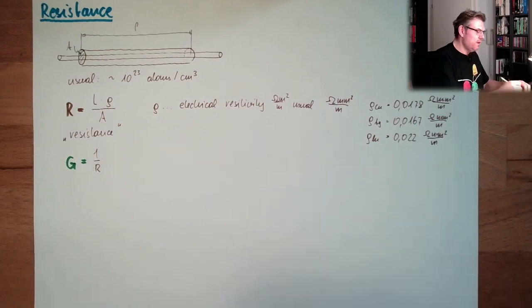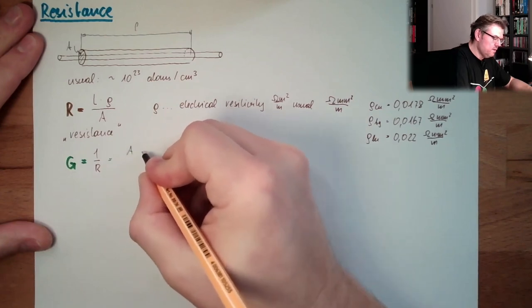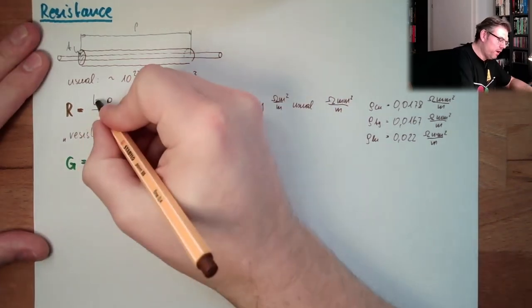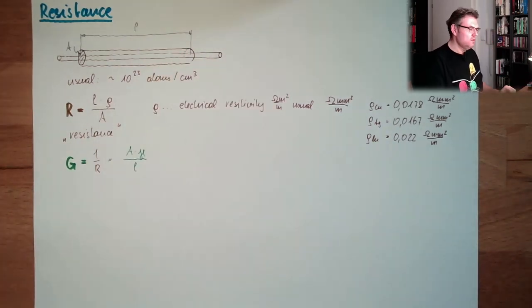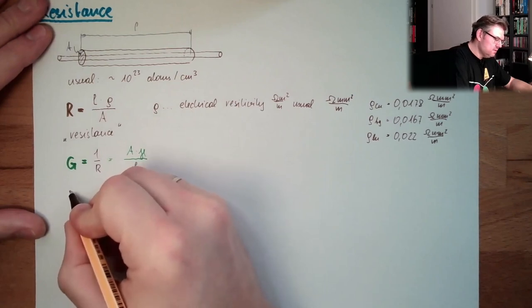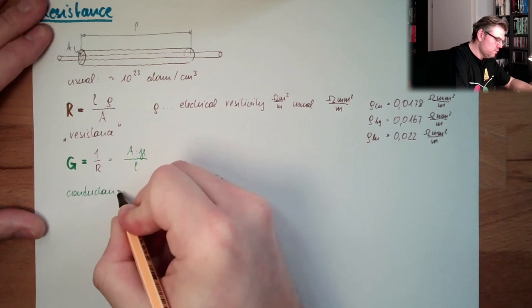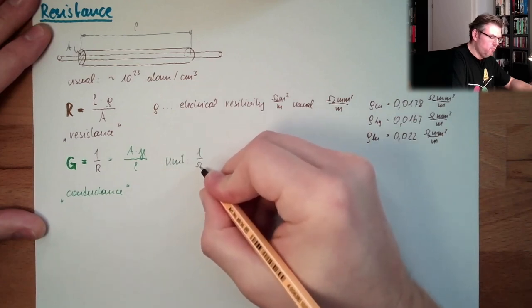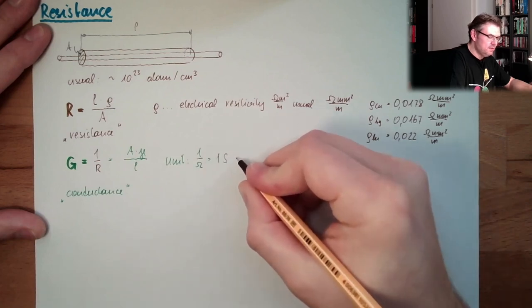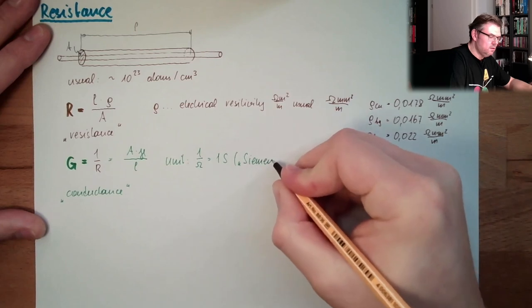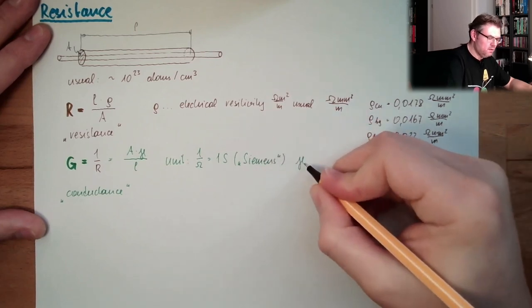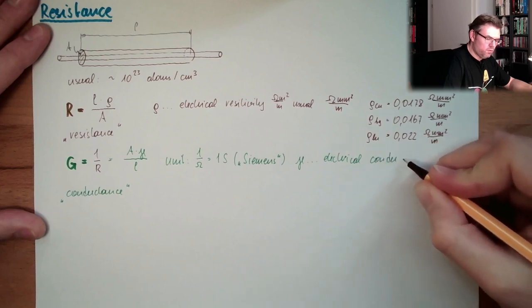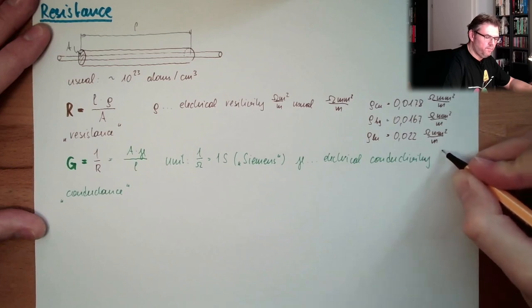And this equals then A. That's also a material constant, a constant gamma. So exactly, exactly the other way around. This thing is called electrical, this is the conductance. Unit. One by ohm. And this is 1 Siemens. And this gamma is the electrical conductivity. This is 1 divided by this rho.